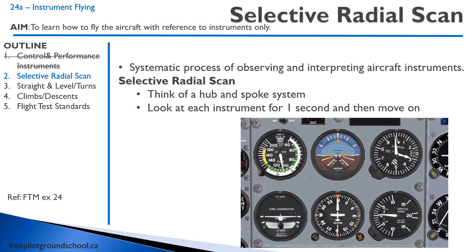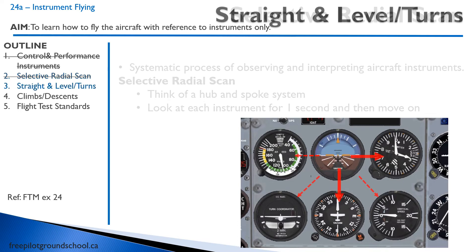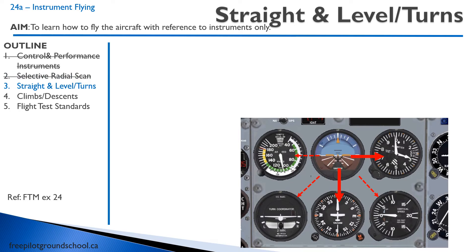What we do if we end up in cloud — and this goes for everybody, not just a private pilot inadvertently in cloud but also an instrument-rated pilot — is we use something called a selective radial scan. The way to think of it is a hub and spoke system, and the hub is usually the attitude indicator. We go from the hub out to various different spokes.